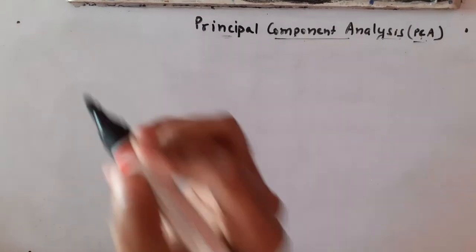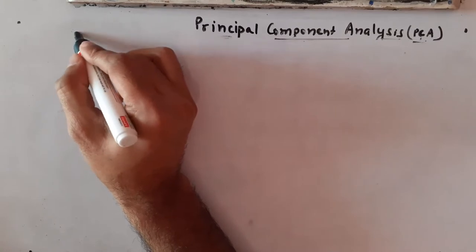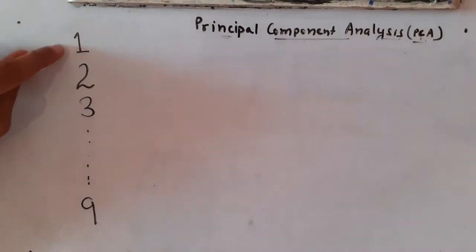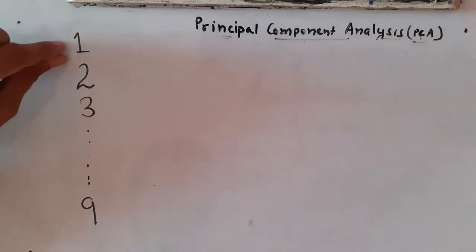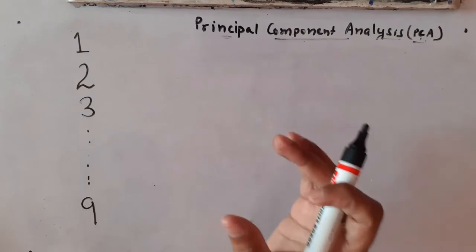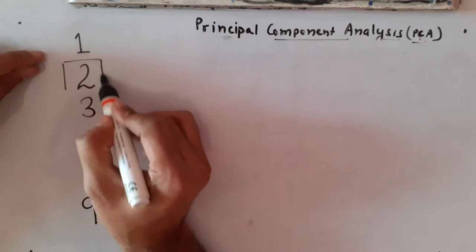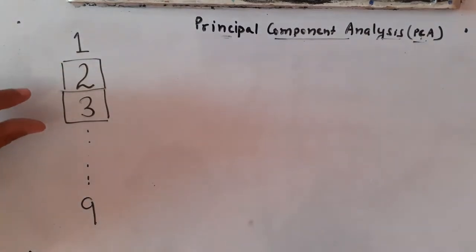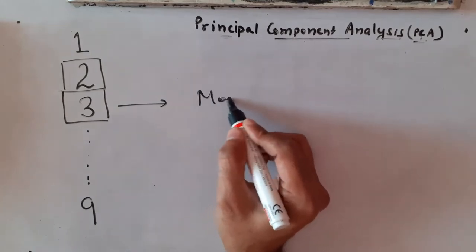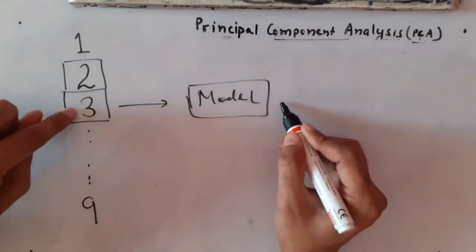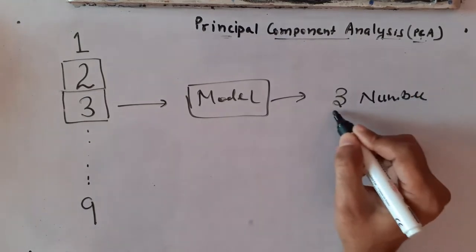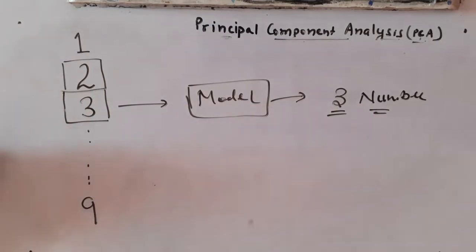Let me take an example. Assume we are given a digit image dataset — handwritten digits from one to nine. We are given images of handwritten digits and we want to build a model which can predict, based on a given image, what number it represents. For example, this is an image of handwritten digit two, this is handwritten digit three, and I want my model to tell me this image is number three.